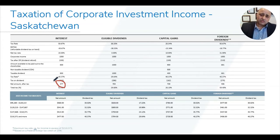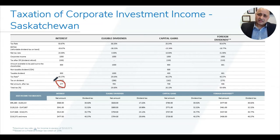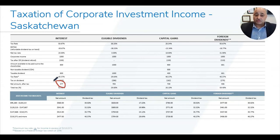If you push that $1,000 eligible dividend down to the shareholder, the shareholder pays 29.64 percent — $296 on $1,000. So on $1,000 of eligible dividend, the net amount reaching your pocket is $704, which is a much better outcome than the $477 from interest income.